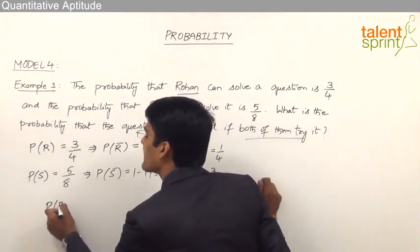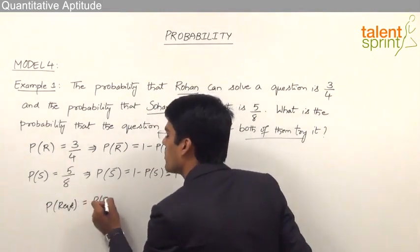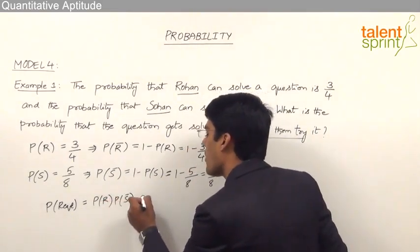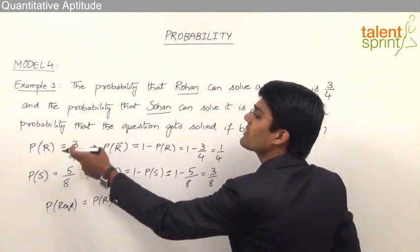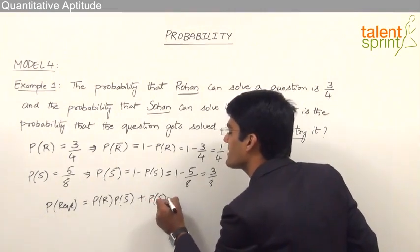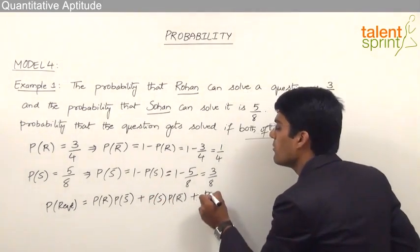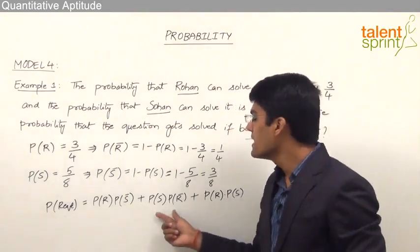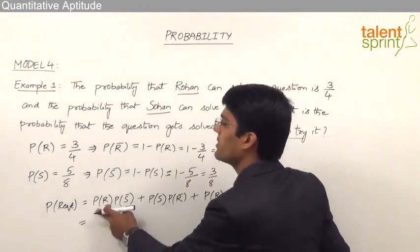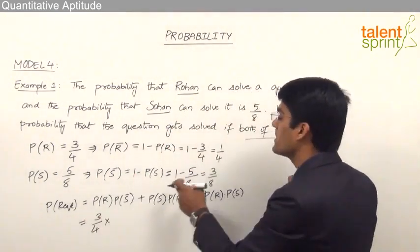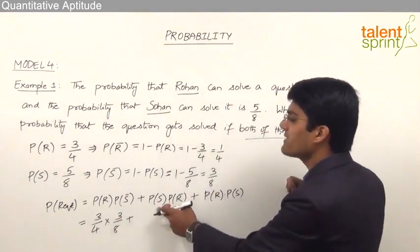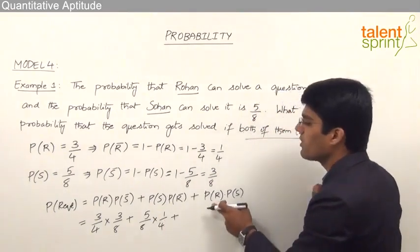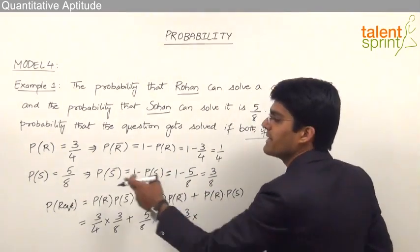The required probability is: probability of Rohan's success into probability of Sohan's failure, plus probability of Sohan's success into probability of Rohan's failure, plus probability of both Rohan and Sohan being successful. So the answer is: 3 by 4 into 3 by 8, plus 5 by 8 into 1 by 4, plus 3 by 4 into 5 by 8.